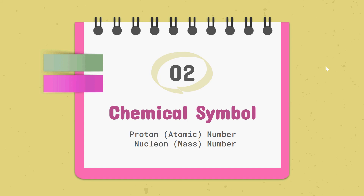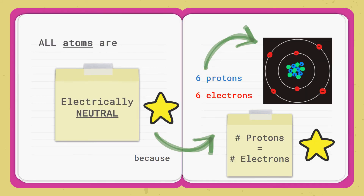Section 2: Chemical Symbol. All atoms are electrically neutral, and this is because the number of protons is equal to the number of electrons. This is true for all atoms. So if we were to fire an atom through oppositely charged plates, the trajectory of the atom will not be deflected towards any plate. You will understand what I mean when you do some test questions.